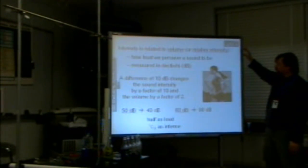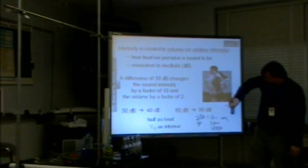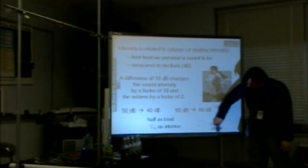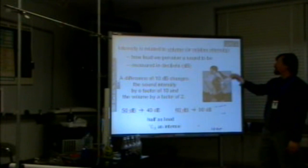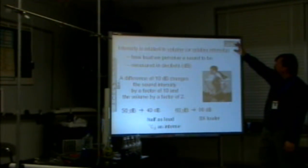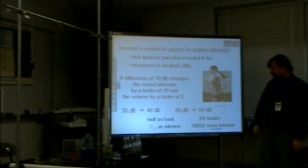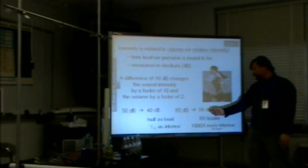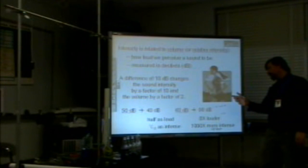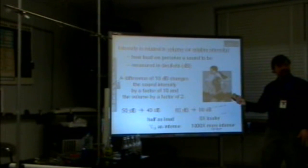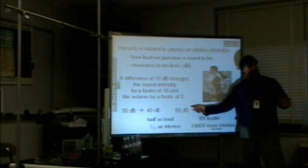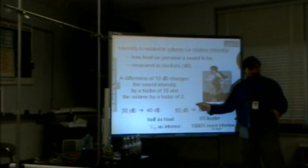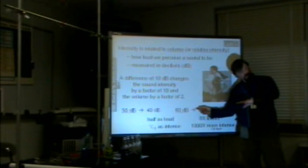From 60 decibels to 90 decibels — we've got three steps of 10, so we got 1,000 times more intense. And then for volume: from 60 to 70 is twice as much, 70 to 80 is twice as much — times 2 is 4 times, 4 times 2 is 8 times. 60 to 70 is twice as much; 70 to 80 is twice as much — times 2 is 4 times. You're doing the volume.